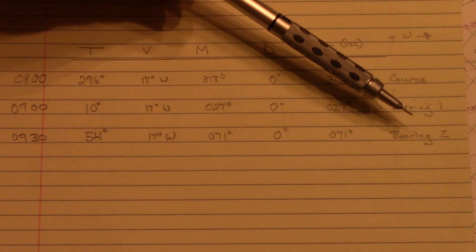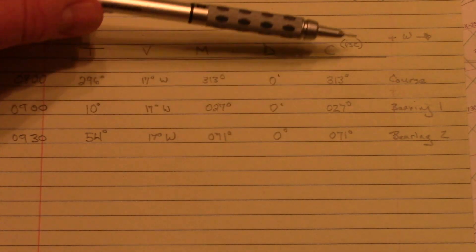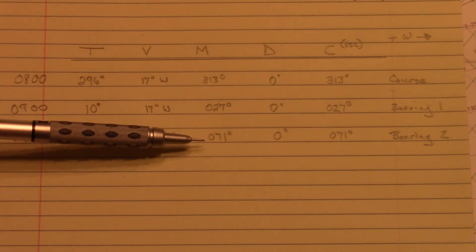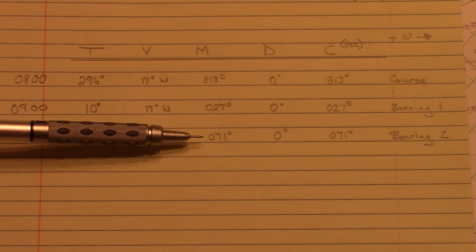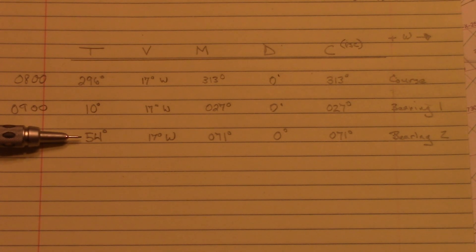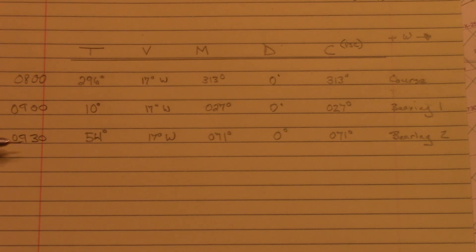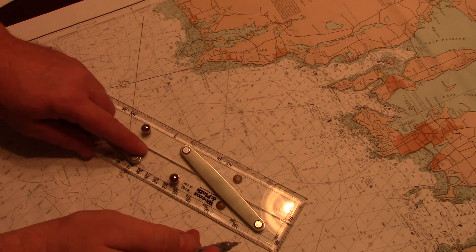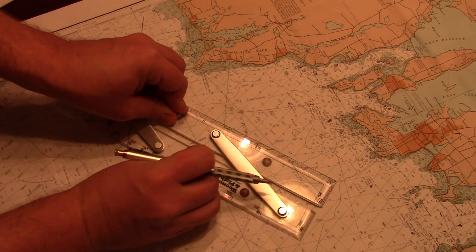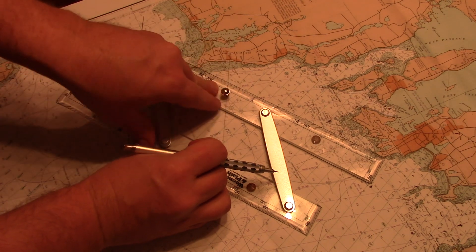According to the problem, we take a second bearing of 71 degrees per ship's compass at 0930. The heading is still 313 degrees, so deviation remains zero, leaving a magnetic bearing of 71 degrees. Correcting for 17-degree westerly variation gives us 54 degrees true. We come to the compass rose, find 54 degrees true, line up with the center, walk the parallel rule over to Point Judith light, and mark that second bearing.